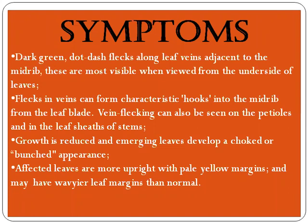Let us see the symptoms of bunchy top of banana. Dark green dot-dash flecks along the leaf veins adjacent to the midrib — these are most visible when viewed from the underside of the leaf. These flecked veins can form characteristic hooks into the midrib from the leaf blade, which can also be observed on the petioles and the leaf sheath.